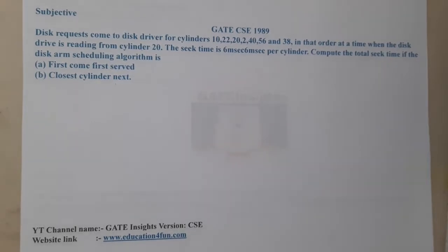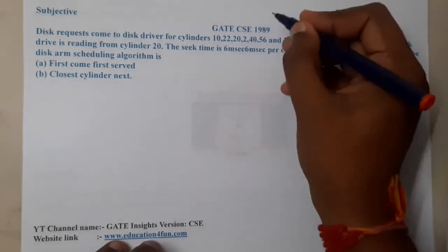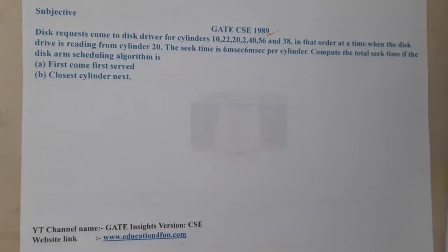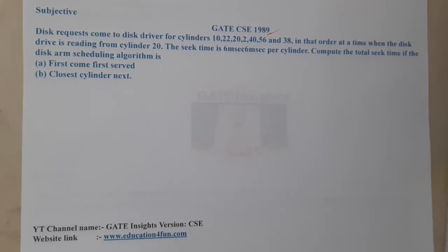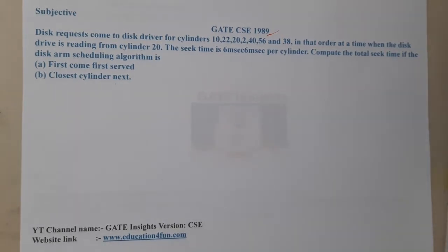Hello guys, we are back with our next lecture. This question belongs to GATE CSE 1989. The given question is: disc requests come to a disc drive for cylinders 10, 22, 20, 2, 40, 56, and 38, in that order.